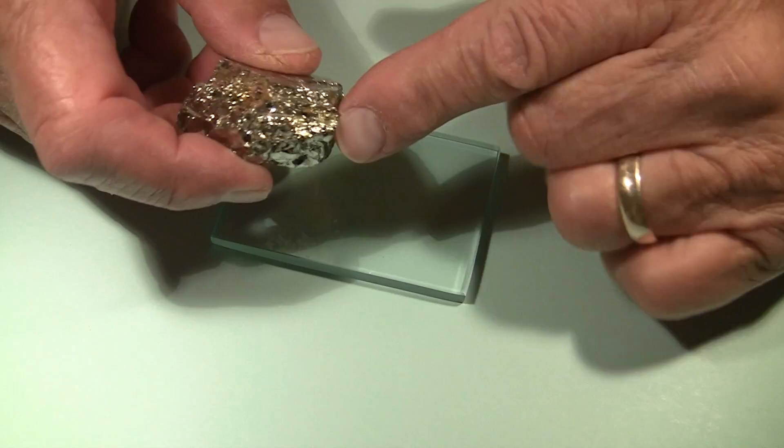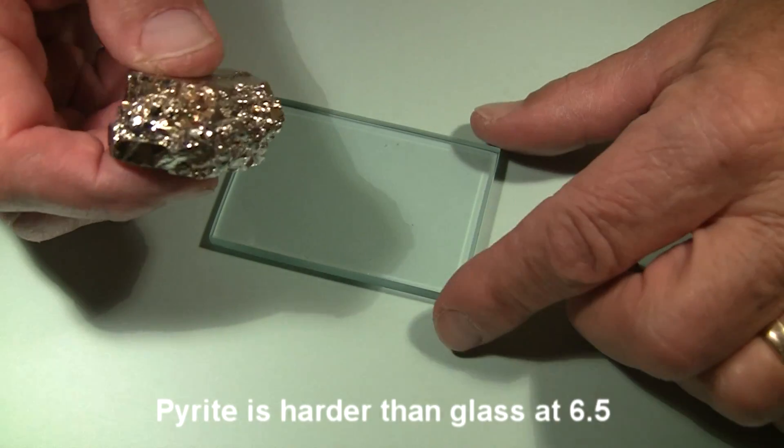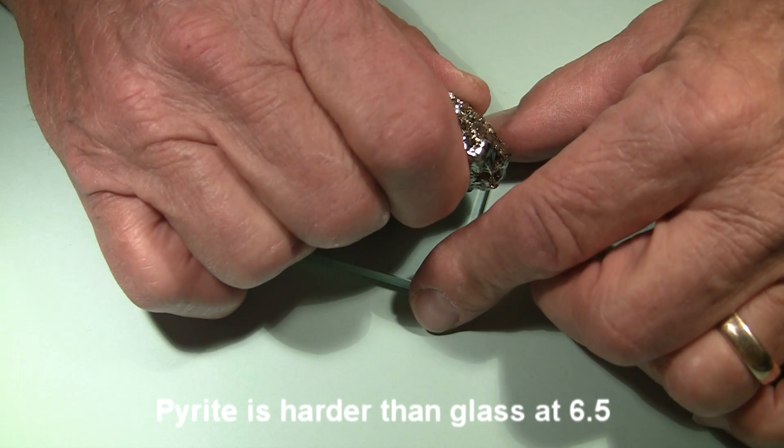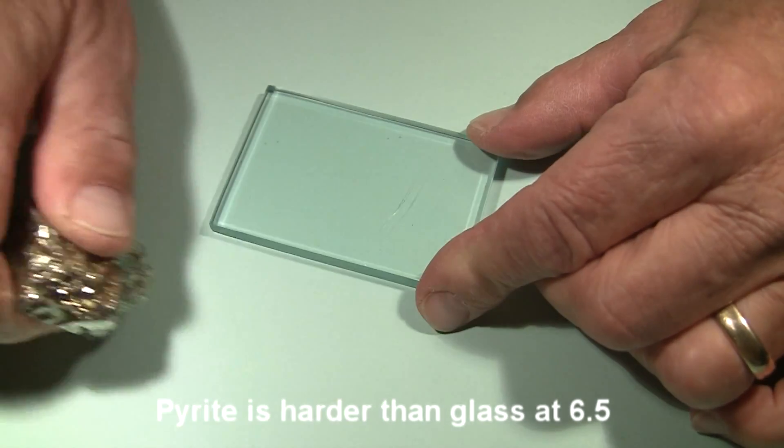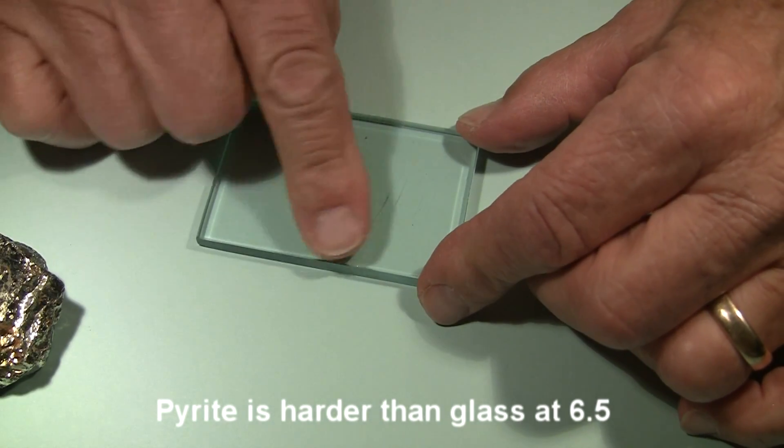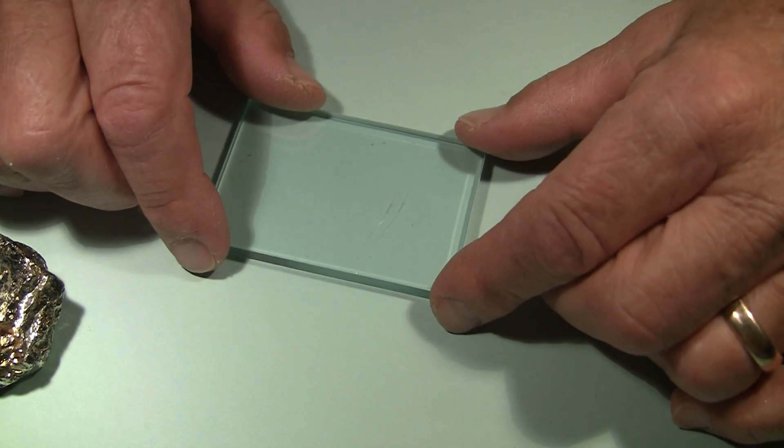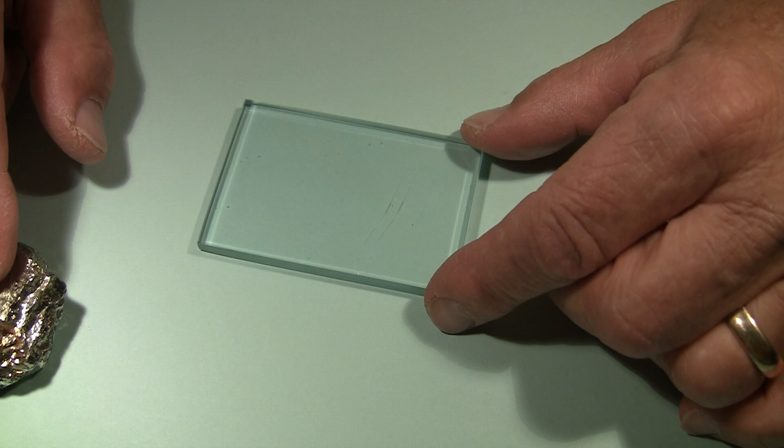And again, with just fairly light pressure, I'm looking for a nice point here on this chunk of rock, and rub it across here. It definitely scratched the glass. So that is a positive test for pyrite.